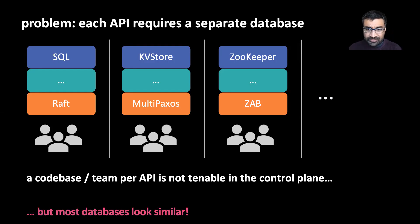Our observation, though, is that all of these databases have a similar structure. There's a consensus protocol at the bottom and a replicated state machine on top. But a lot of that state machine consists of generic logic that can be reused across different APIs.